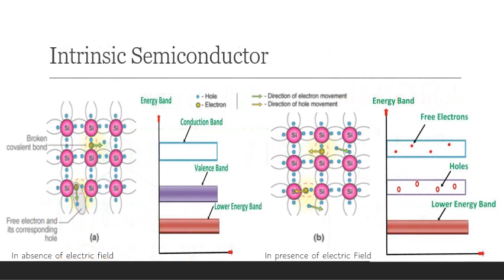First, we will discuss about the intrinsic semiconductor. The intrinsic semiconductor is made of very pure chemical and it is made up of only a single type of element. Germanium and silicon are the common types of intrinsic semiconductors.